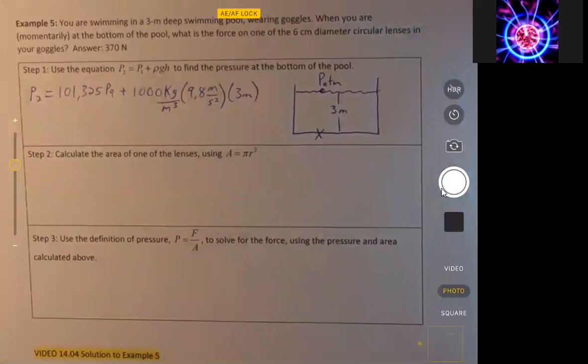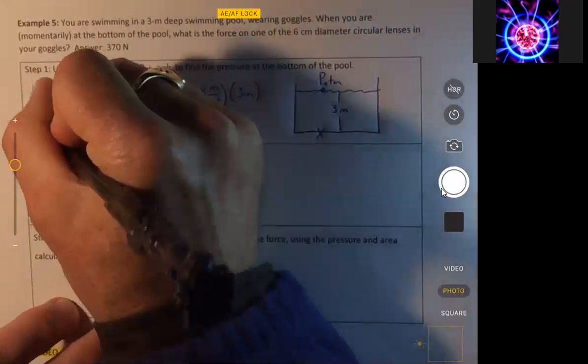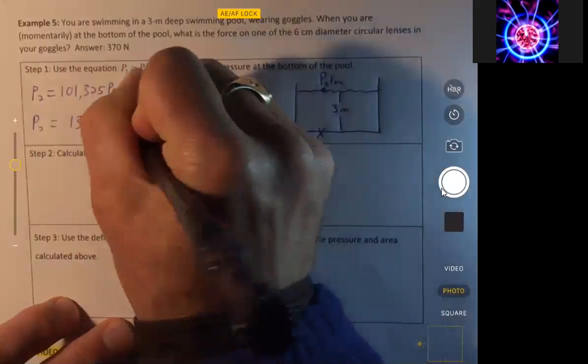And we put those into our calculator, and we get a pressure of 130,725 pascals.